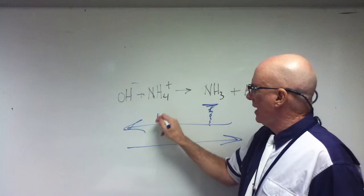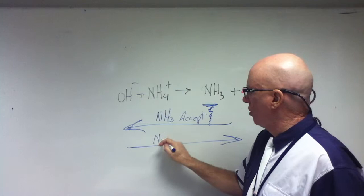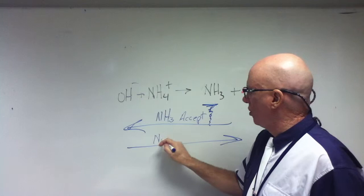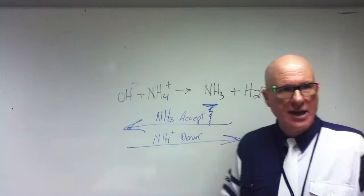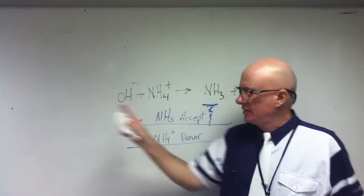The NH₃ is an acceptor, and the NH₄⁺ is going to be a donor. That's the whole concept of the Brønsted-Lowry acid-base theory. If it accepts a proton, it's a base. If it donates a proton, it's an acid.